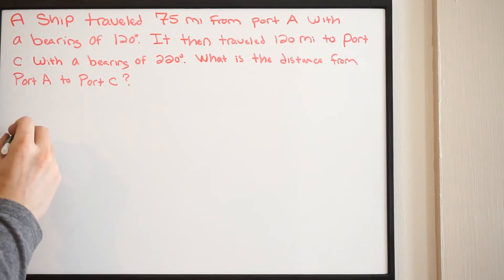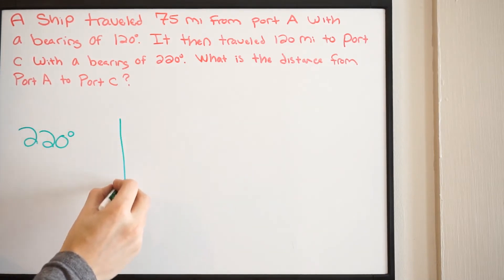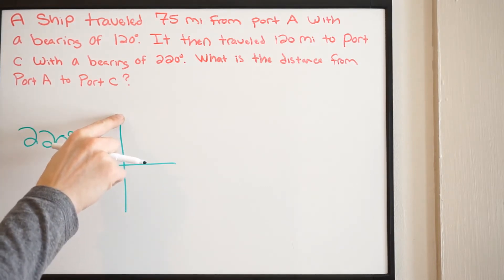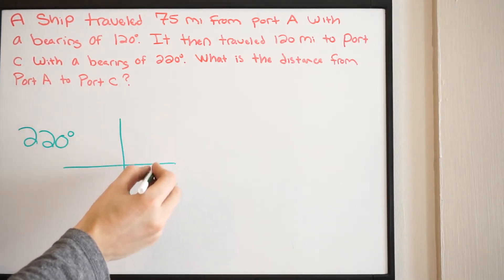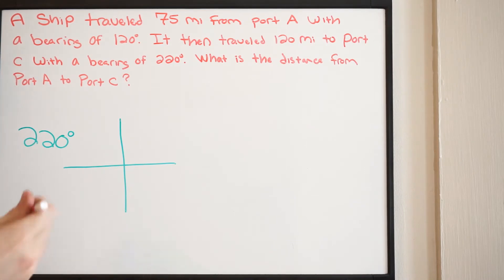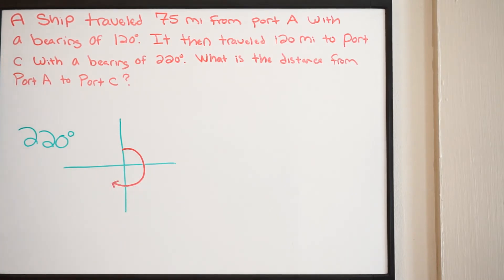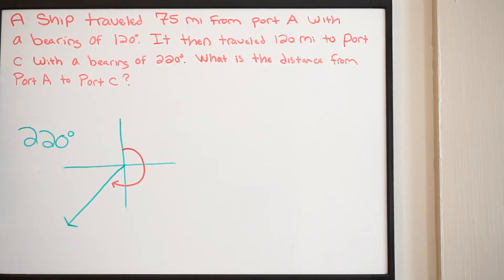Let's say we have a bearing of 220 degrees. You go ahead and create your grid. When dealing with bearing and no cardinal points, you always start at north and go in the clockwise direction. With a bearing of 220 degrees, starting north and going clockwise, that puts us in the third quadrant, and you draw your vector accordingly. That's how we place the direction in this problem.